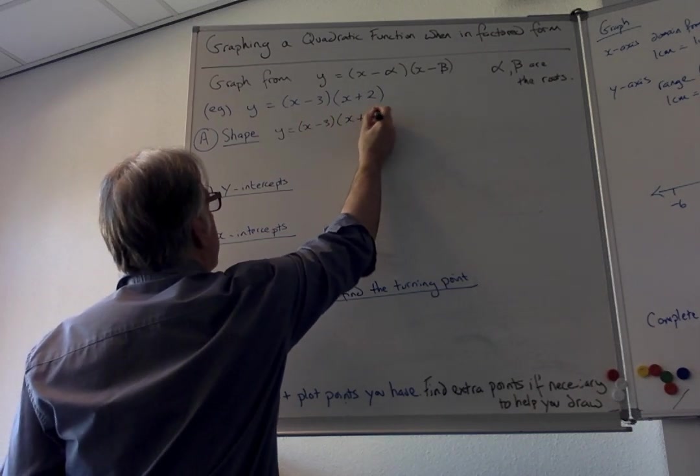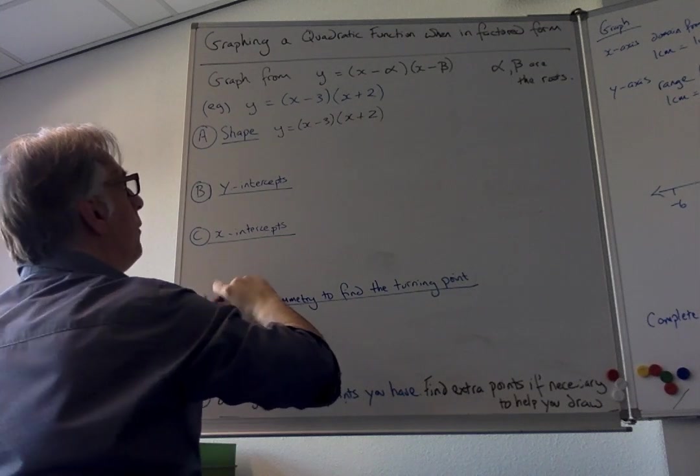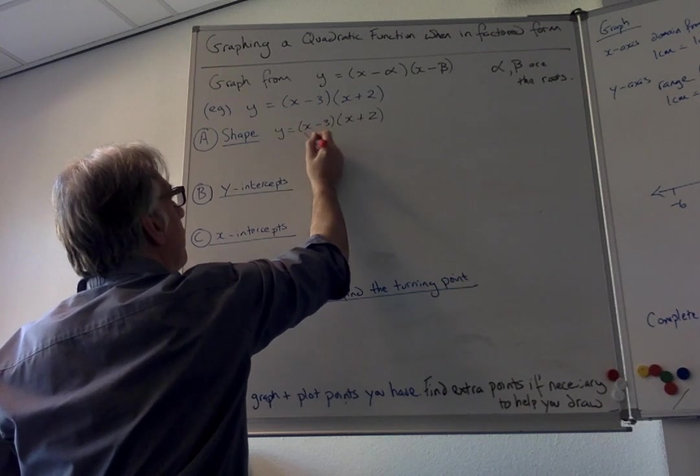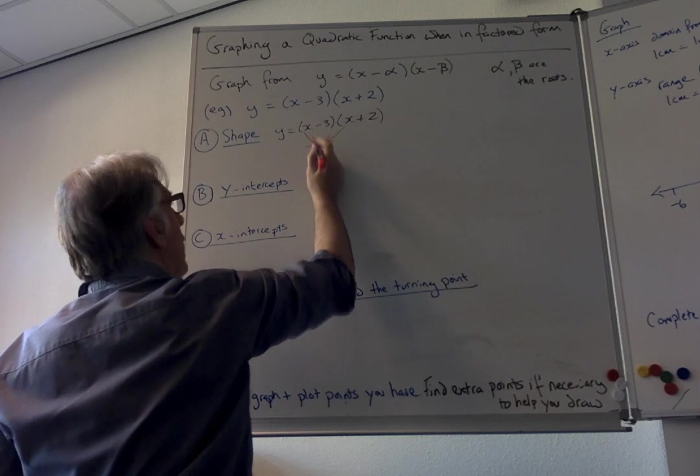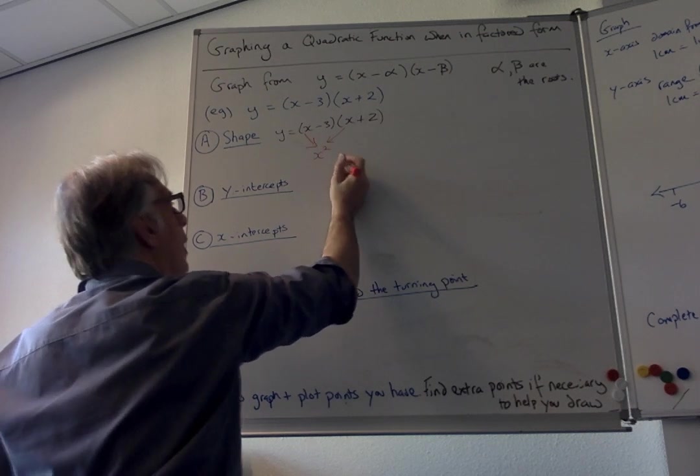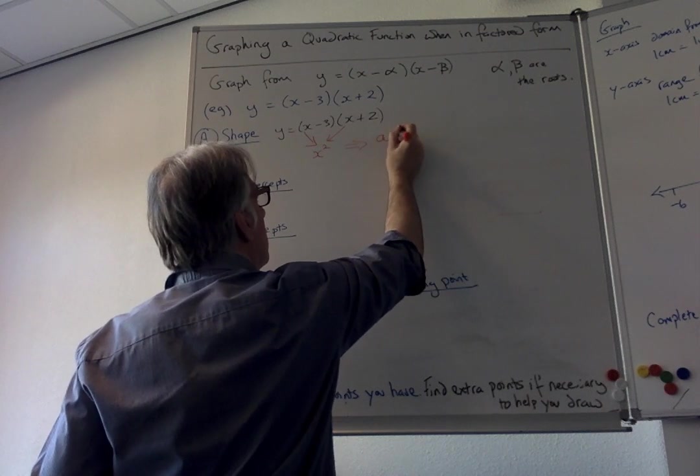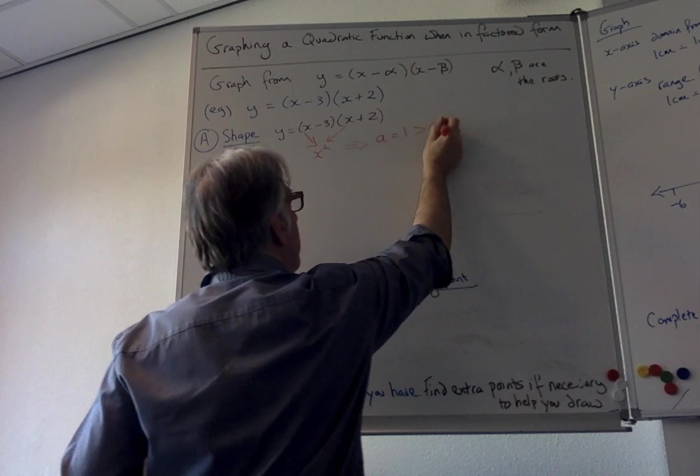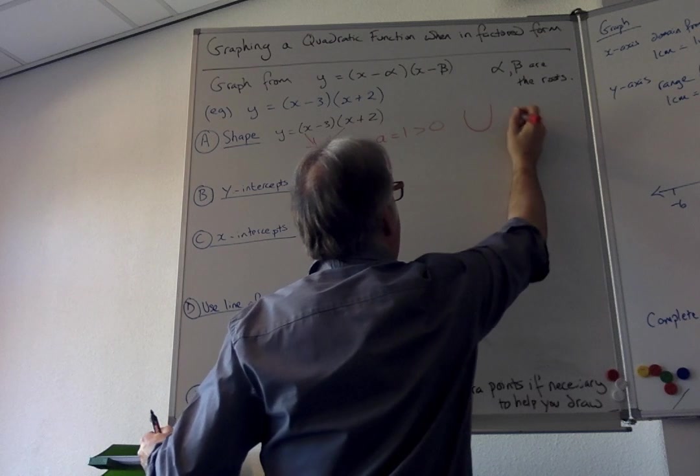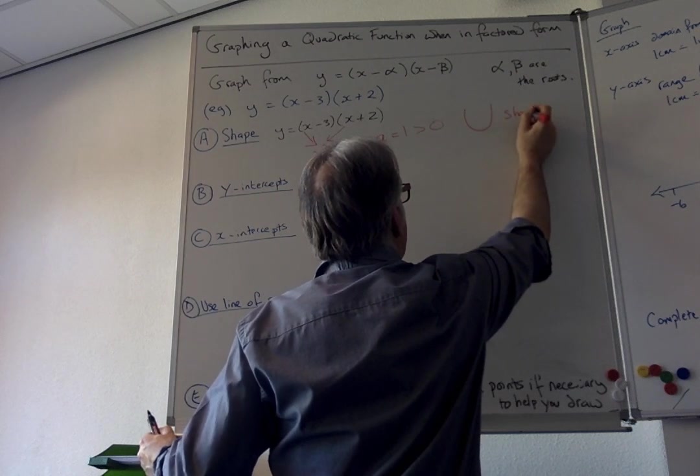The part that dictates what the shape is are the variables here. If I take these two variables and multiply them together I get x squared. That tells me the value in front of it is 1, and 1 is bigger than 0, so I know I'm going to have a u-shaped parabola.